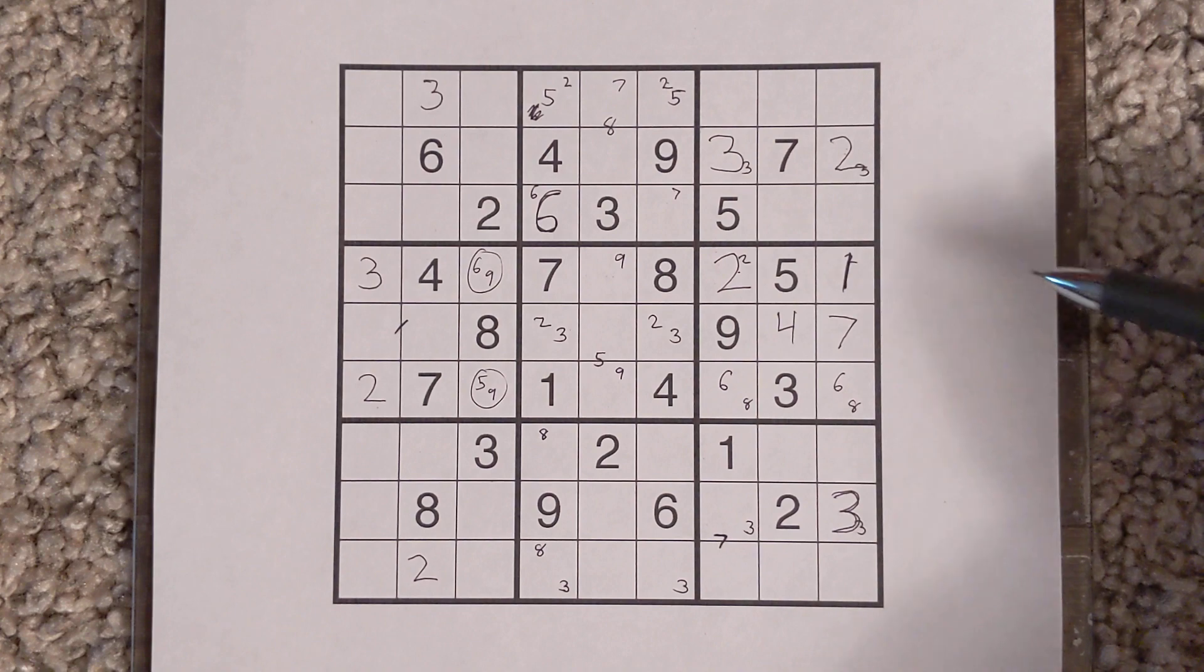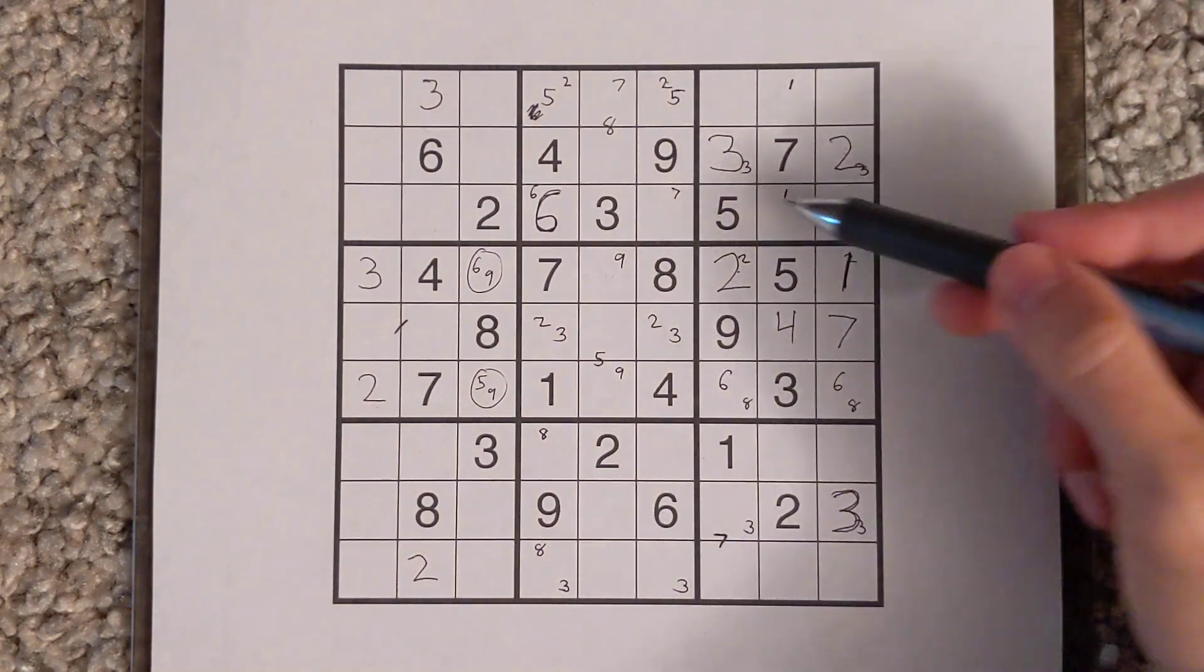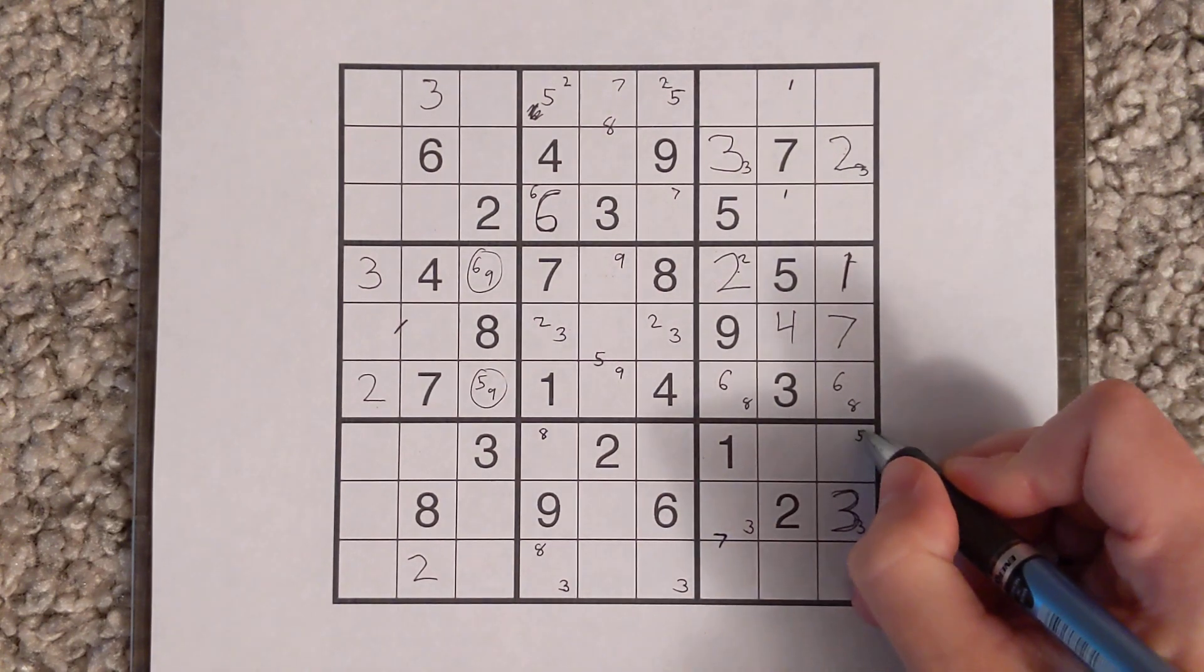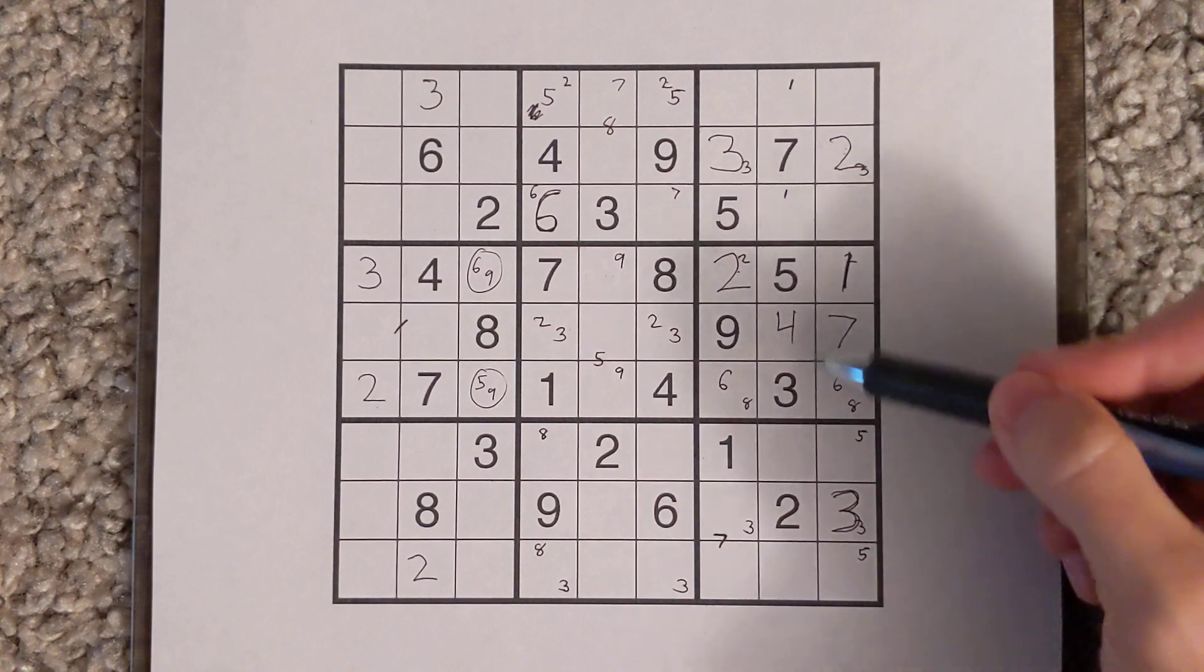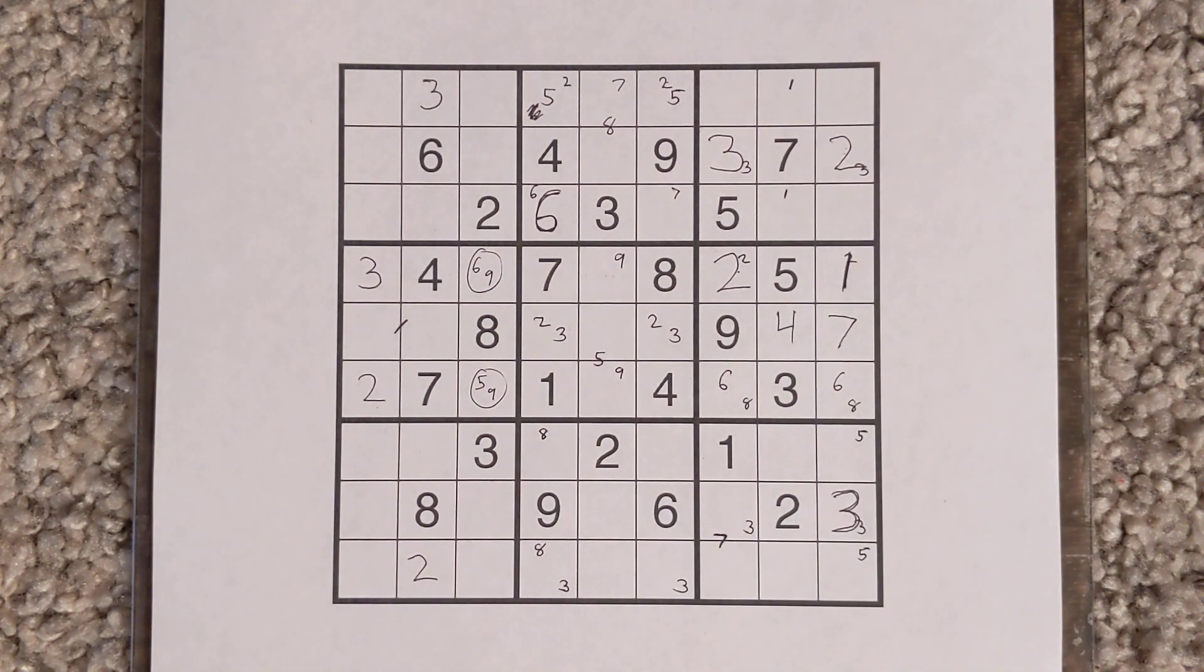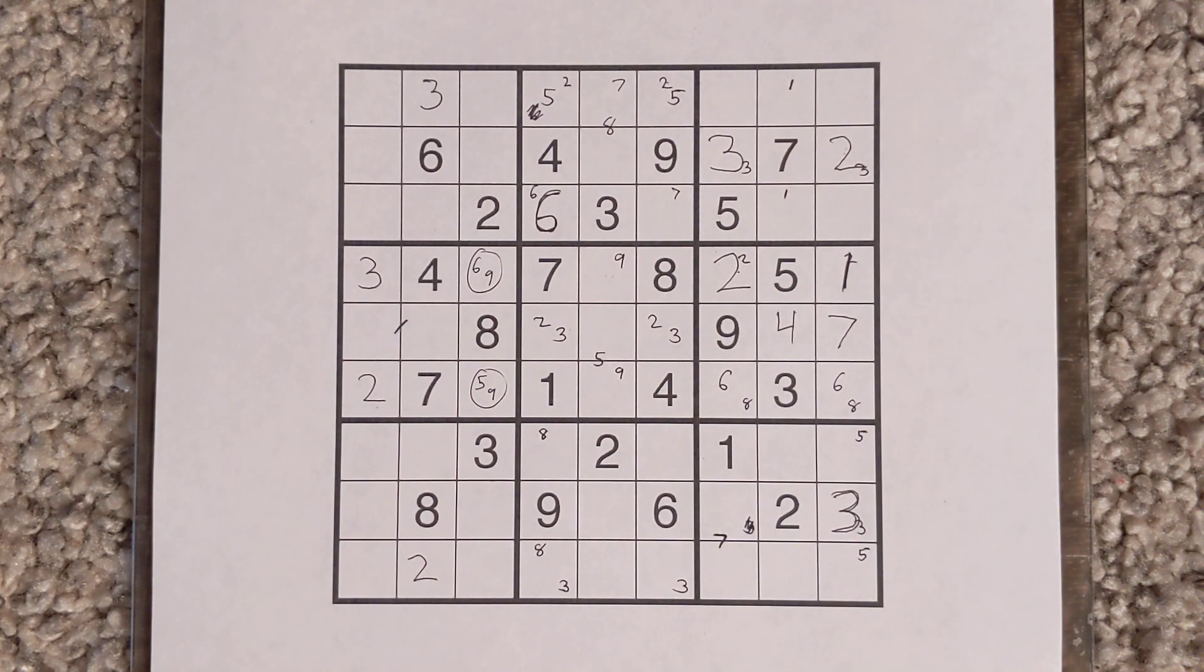There are still this one note I can put in, nothing around the fours, but there's a five note here that may be helpful. Nothing around the six, nothing around the eight, nothing around the nine. So we've marked as much as we can on this right side, so we're going to have to come back to think through where's the next potential space to make progress in the puzzle.